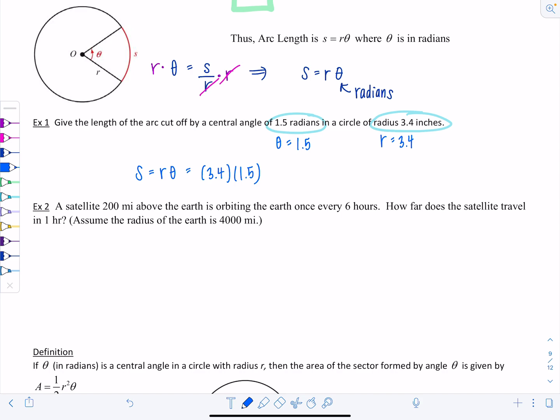You can use your calculator, or maybe you did 1.5 times 3.4 in your head. We'll round to one decimal place like the problem, since everything has one decimal place. This is 5.1 inches. The units for arc length match the units on the radius.